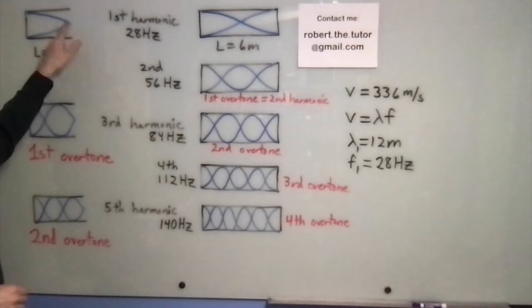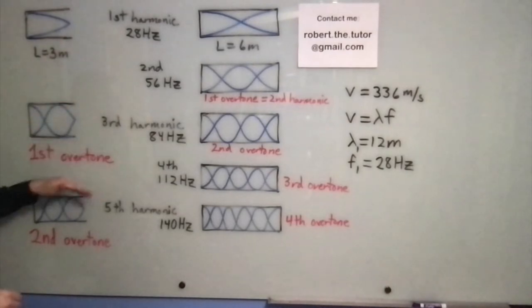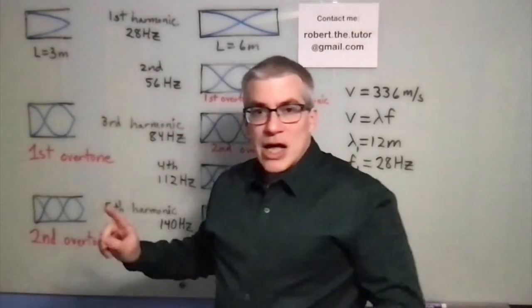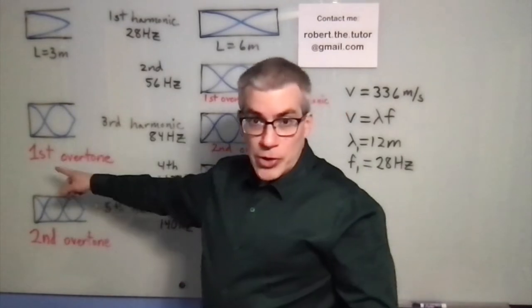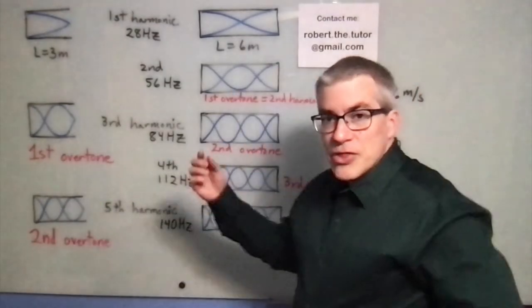Now, pipes that are uneven, that are open at one end and closed at the other, you only get the odd harmonics. So the next thing that you get is not the second harmonic, it's the third harmonic, and it has three times the frequency.